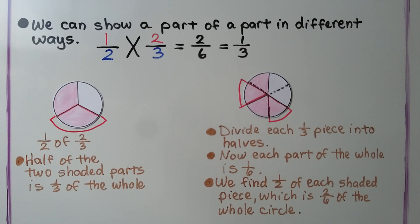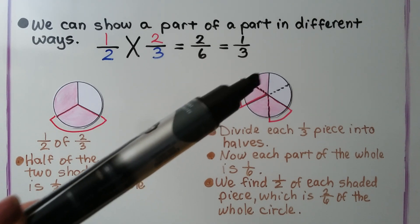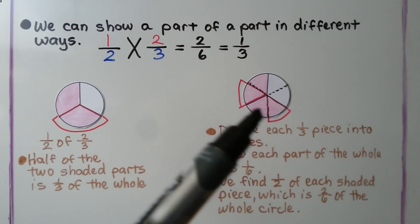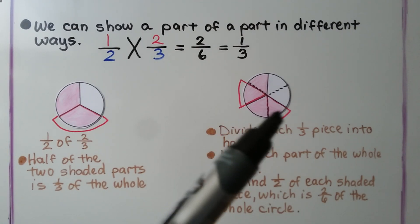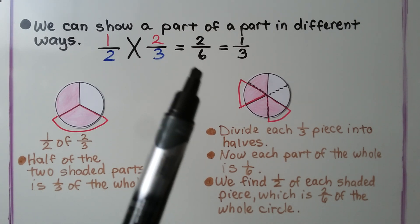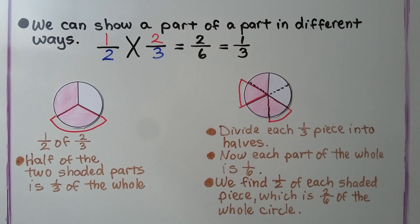We find half of each shaded piece: half of one piece is one-sixth, and half of the other is one-sixth. That's two-sixths of the whole circle, and two-sixths simplifies to one-third.